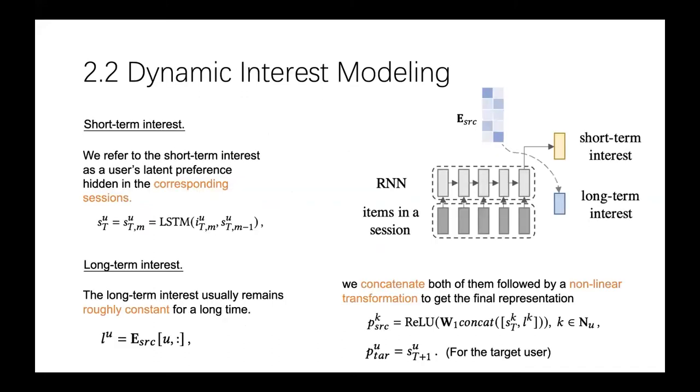And then is the dynamic interest modeling. We refer to the short-term interest as the user's latent preference hidden in the corresponding sessions. Following recent advances, we use RNNs to model a user's session. In practice, we use the embedding matrix to depict a user's long-term interest since we mainly focus on the influence on others in the long-term interest modeling. After that, for the neighbors, we concatenate both the short-term and long-term interest, followed by a linear transformation to obtain their representations. As for the target user, we only use the short-term interest to characterize it since we aim to predict her next step.